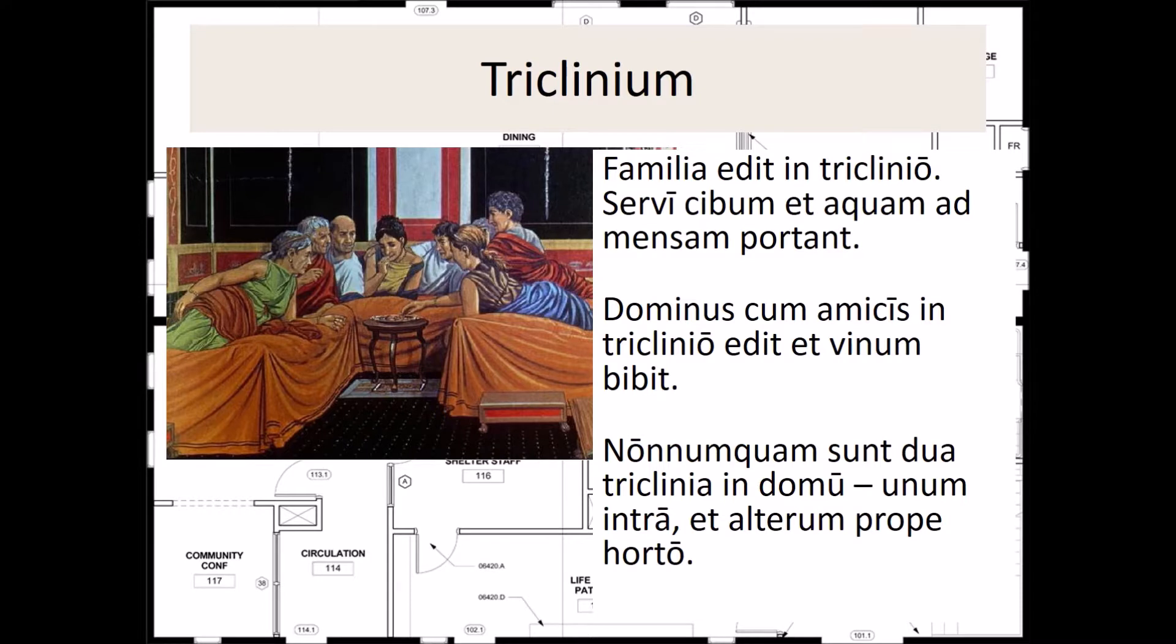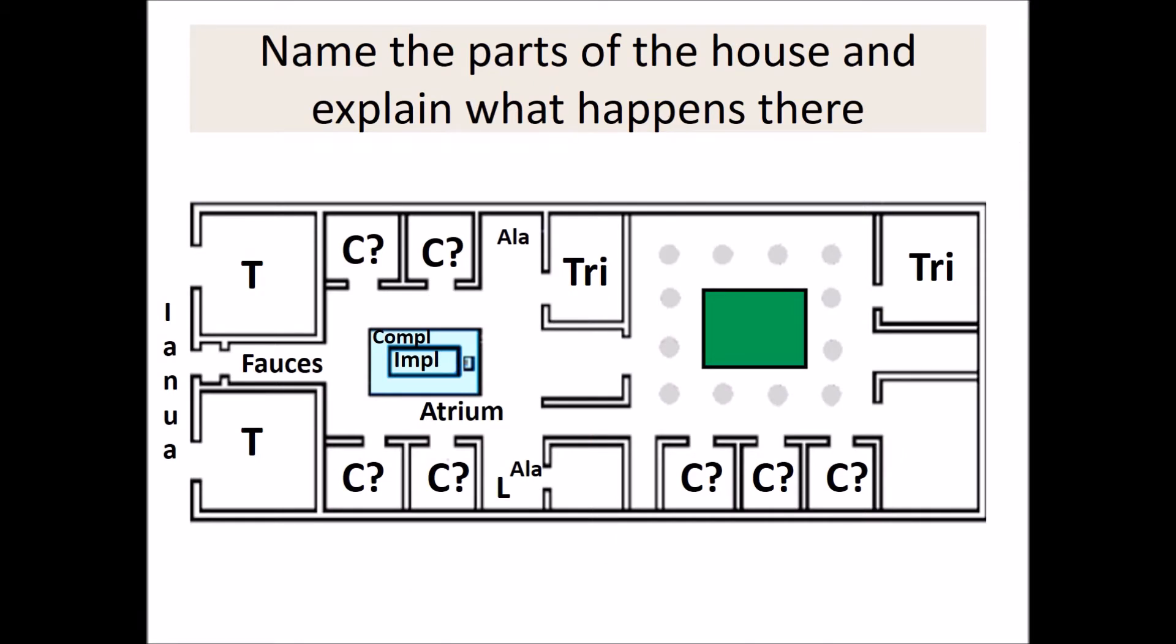The next room that we have in our Roman domus is the triclinium. Familia edit in triclinio. Servi cibum et aquam ad mensam portant. Dominus cum amicis in triclinio edit et vinum bibet. Here you'll see the location of the triclinia within a Roman domus. Now for sure there is going to be one triclinium on the interior side of the domus, just off of the atrium, and that's because not all Roman domus would actually have this secondary part. Only the wealthier domi would have the secondary part. If you were wealthy, it's frequent that you would have a second triclinium. One would be used for business with your clientes, your clients, and the other would be used for private family meals.